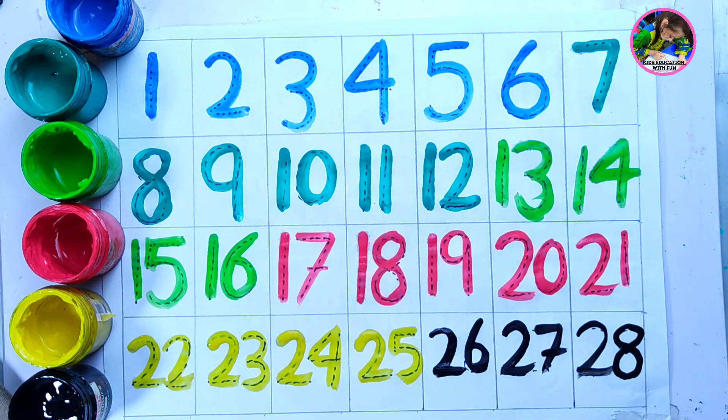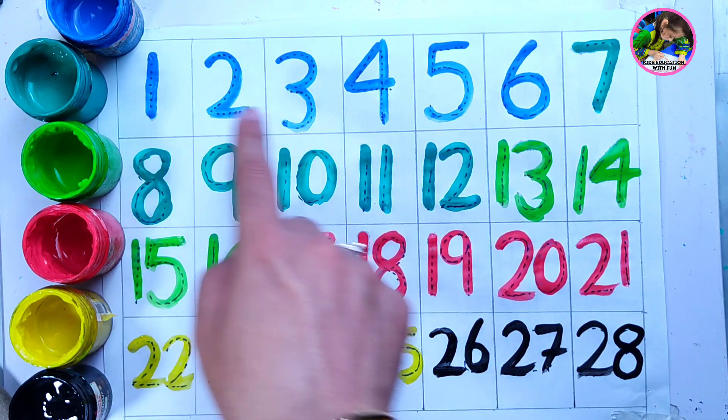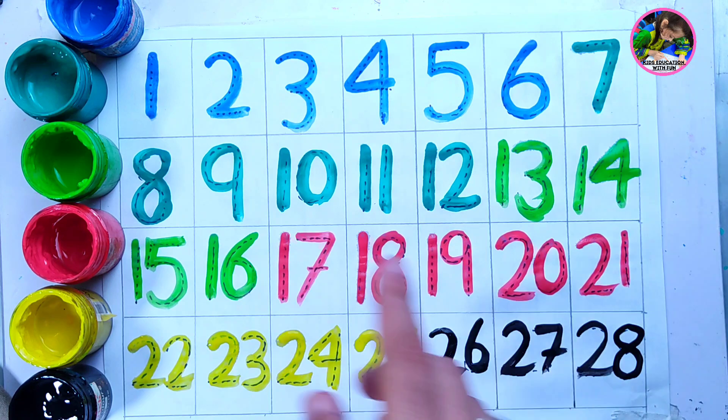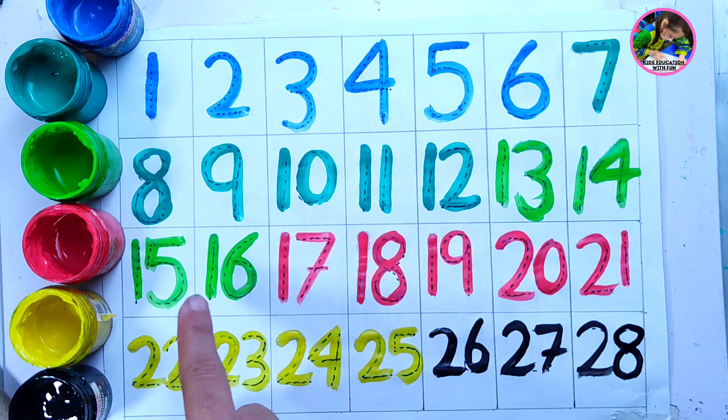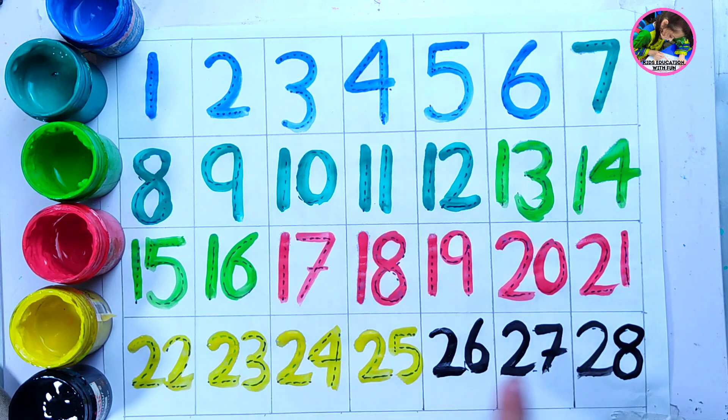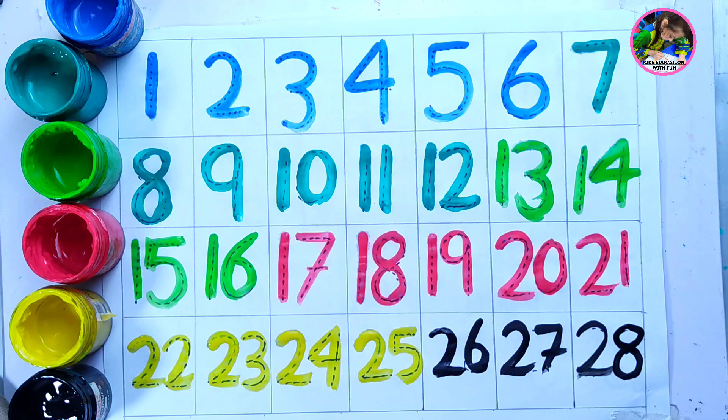Wow, we have just done. Dear kids, we drawn numbers from 1 to 28 using dark blue color, dark green color, light green color, red color, yellow color and black color. Dear kids, you also do the same practice. Like this video, share it and subscribe our channel. Thanks for watching. Bye bye.